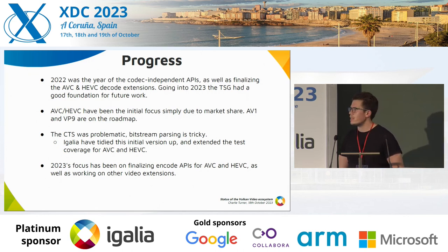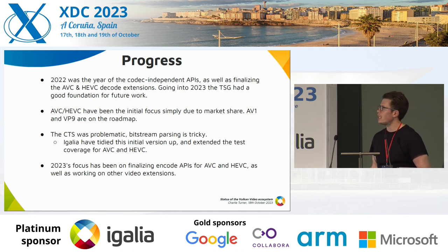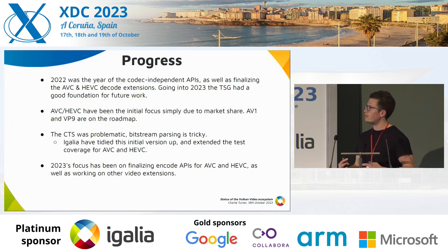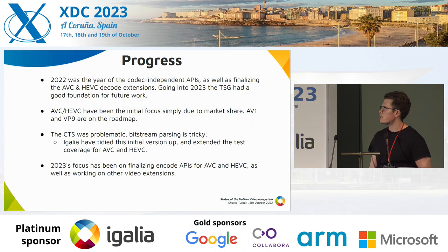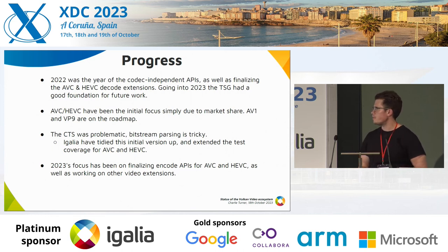One problem we did have was in the CTS. It turns out that parsing bitstreams is a pretty tricky problem, and the way it was initially approached was to incorporate a binary library that caused a lot of problems for users of the CTS. So we tidied that up — NVIDIA kindly released their parsers in source form, which is a nice self-contained set of files for doing bitstream parsing. We've also extended the coverage of AVC and HEVC significantly. The focus going towards the end of 2023 is to finalize the encode APIs for AVC and HEVC, as well as working on some other codec extensions.